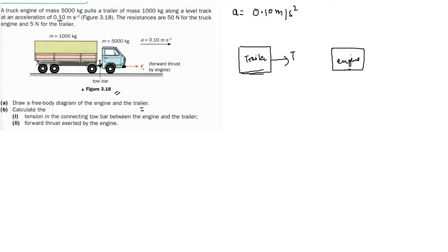The tension is here. Since the system is moving to the right — that is the direction of movement — the net force acts in this direction. Since tension acts to the right, friction (written as small f) acts to the left. There is no other force acting on the trailer from this question.